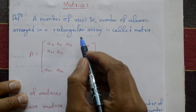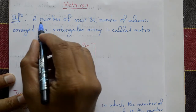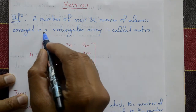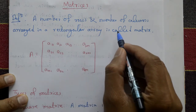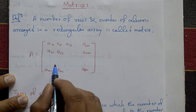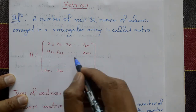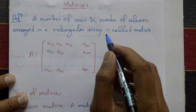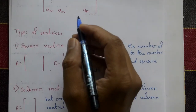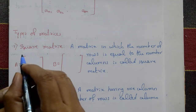First, a definition of matrix. A number of rows and number of columns arranged in a rectangular array is called a matrix. The number of rows and number of columns arranged in a rectangle — that is called a matrix. Next are the types of matrices.